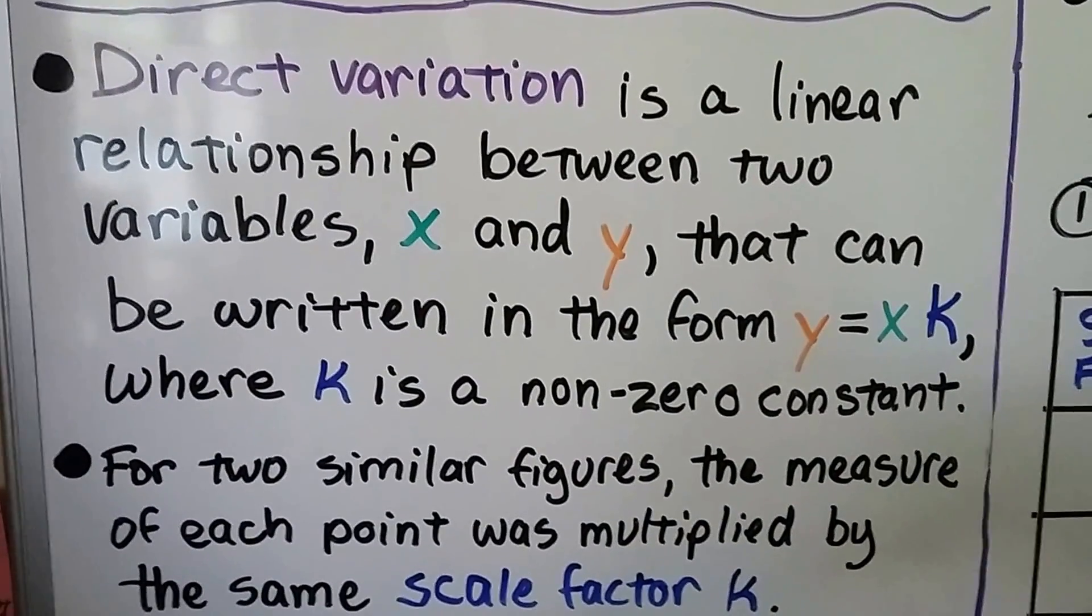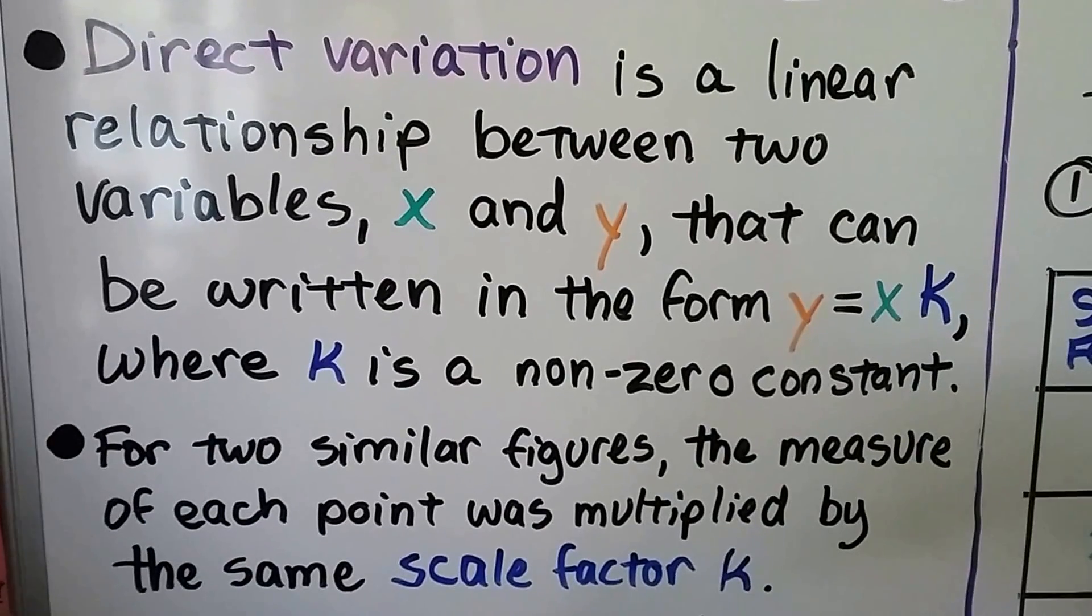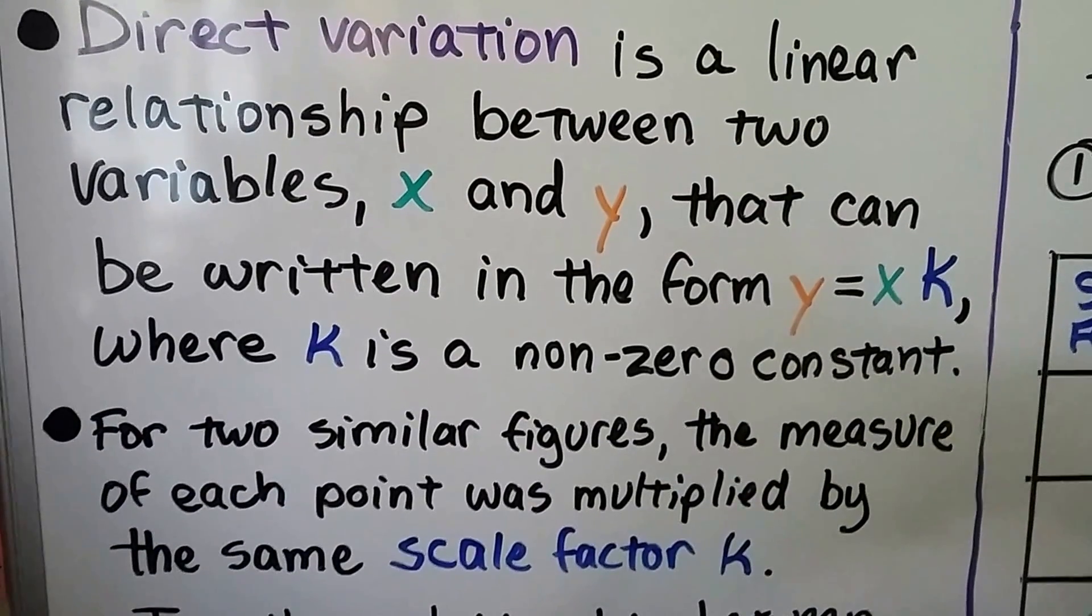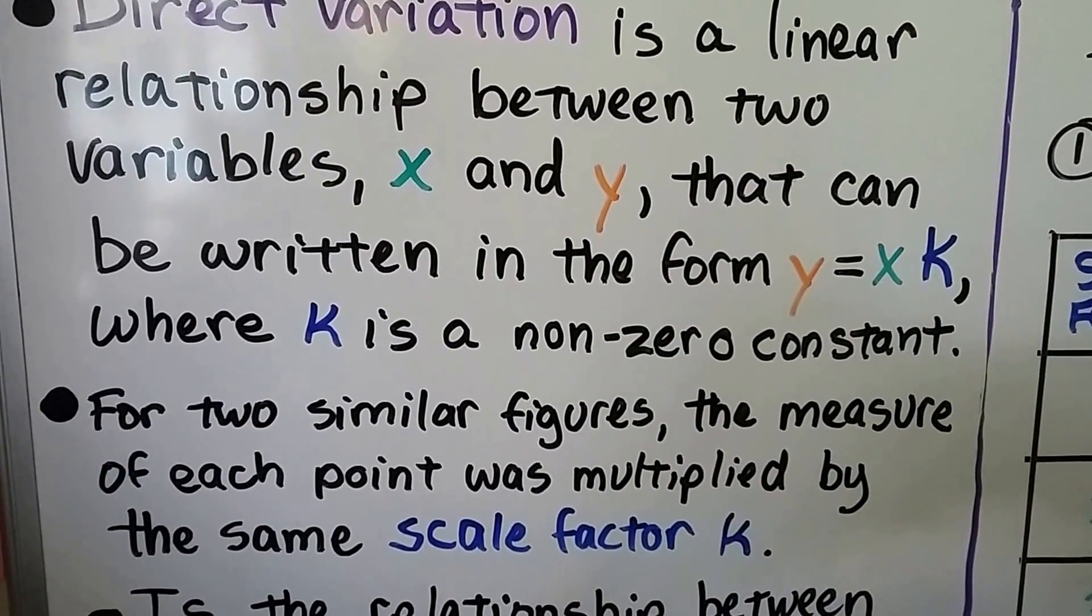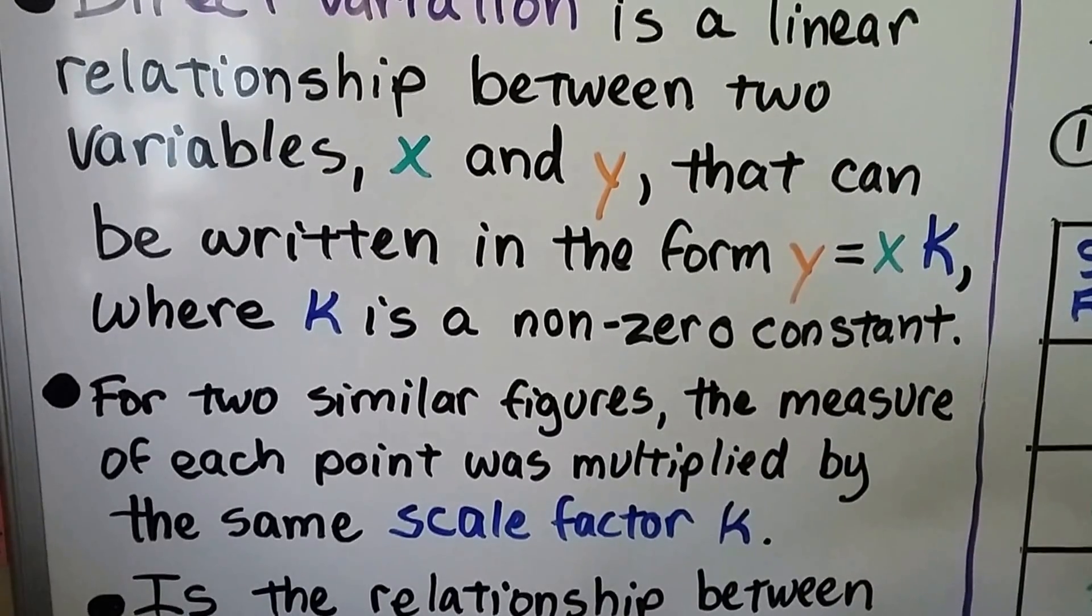Direct variation is a linear relationship between two variables, x and y, and that can be written in the form y equals kx, where k is a non-zero constant.